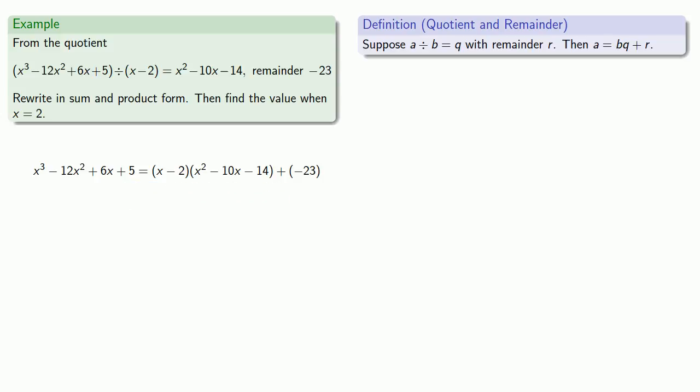How about trying to evaluate this when X equals 2? So remember, equals means replaceable, so every time I see X, I'm going to replace it with 2. Again, equals means replaceable, so I can either find the left-hand side or I can find the right-hand side. If we take a look at the right-hand side, the first factor, 2 minus 2, is going to be 0, which means that this entire first term will multiply to 0.